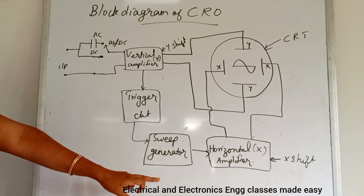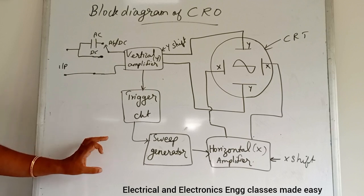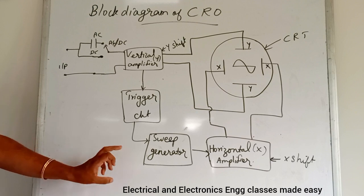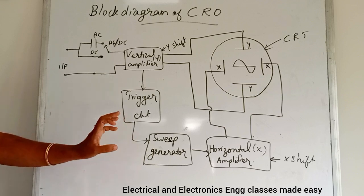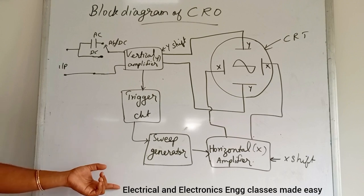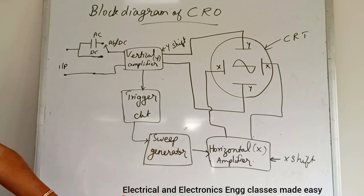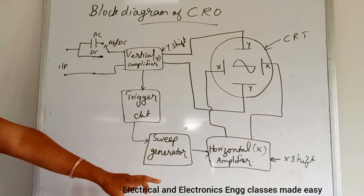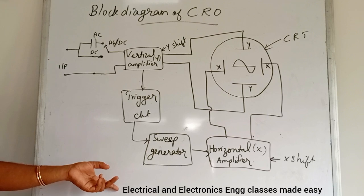The trigger circuit is used to start the horizontal sweep at a specific instant with respect to the waveform under observation. Triggering or synchronization is achieved by making a connection between the Y amplifier and the time base, allowing a stationary pattern to be observed on the screen. The sweep generator produces a sawtooth voltage and causes a horizontal deflection of the spot proportional to time. The horizontal amplifier, also called the X amplifier, amplifies the sawtooth time base voltage and feeds it to the X plate.